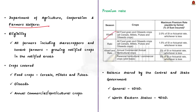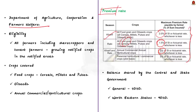Regarding crops covered under the scheme: food crops like cereals, millets, and pulses are covered, as are oilseeds and annual horticulture crops. The premium rate payable by farmers varies by season: 2% for all kharif food and oilseeds crops, 1.5% for rabi food and oilseeds crops, and 5% for annual commercial or horticulture crops. The balance premium is shared by the central and state governments on a 50:50 basis, except in northeastern states where the share is 90:10.